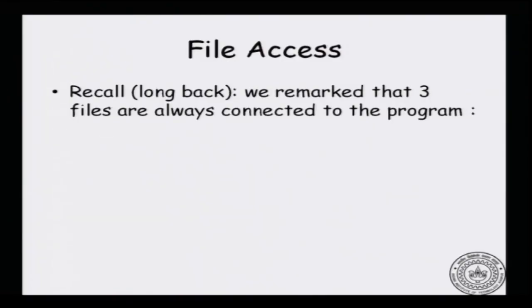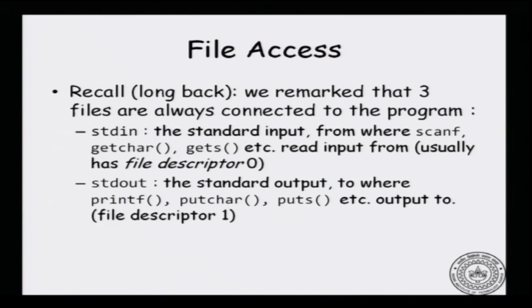Recall that in one of our earlier lectures, I said that there are three files available by default to all C programs. These are: standard input (stdin), which is associated usually with the keyboard and is where scanf, getchar, and gets get their input from — it has file descriptor 0. Similarly, standard output (stdout) is where printf, putchar, and puts output their data to; this is usually visible on the terminal on the screen, and has file descriptor 1.